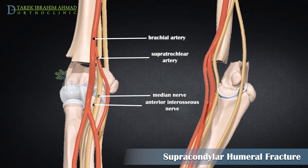In patients with posterolateral displacement of a supracondylar fracture, the brachial artery may be injured when the proximal fragment of the fractured humerus moves medially. The median nerve crosses the elbow joint with the brachial artery, and this displacement puts the median nerve and its anterior interosseous nerve branch at the greatest risk of injury.